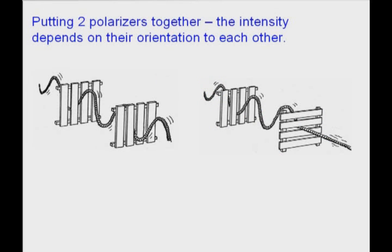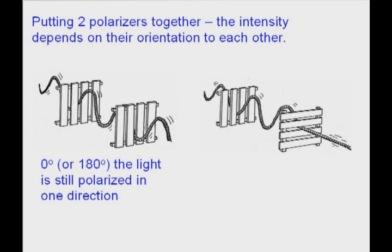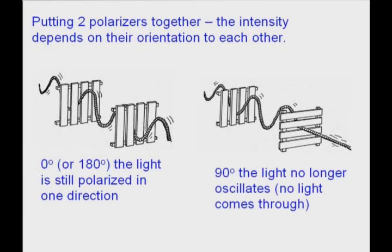Putting two polarizers together changes the intensity. If we have two fences in a row, we can still get the rope to vibrate in that one direction. Just like in a polarizing filter, if they're both lined up in the same orientation, then the light is still polarized in that direction. However, if we turn the filters 90 degrees to each other, all of the light will be blocked out.